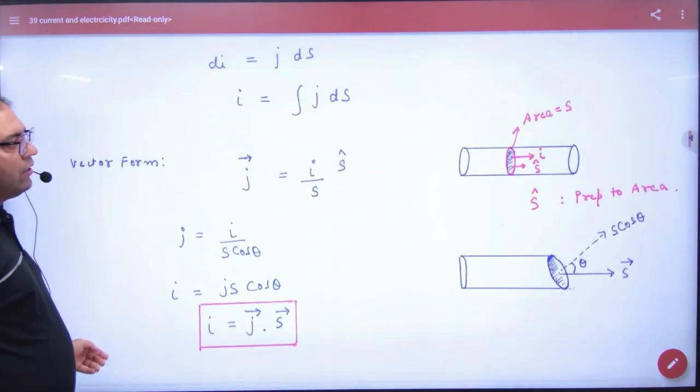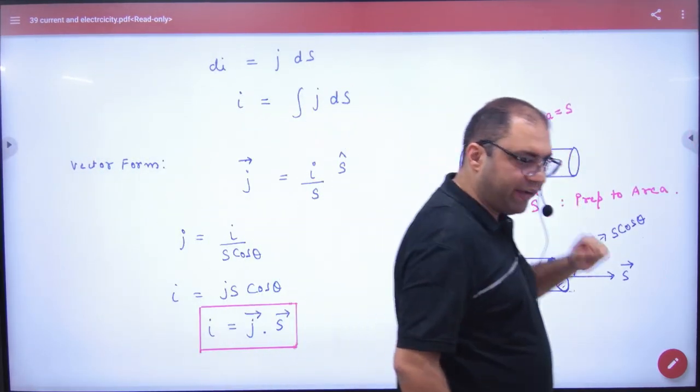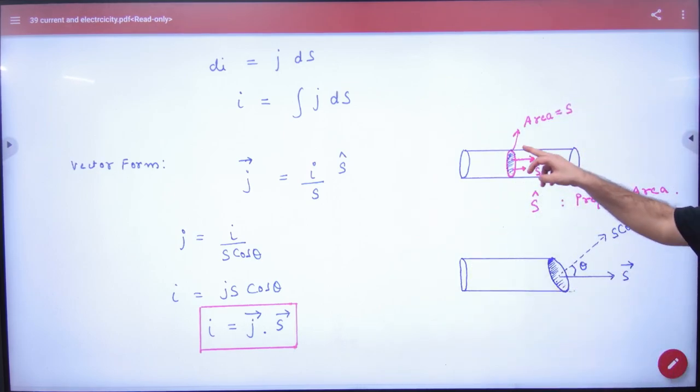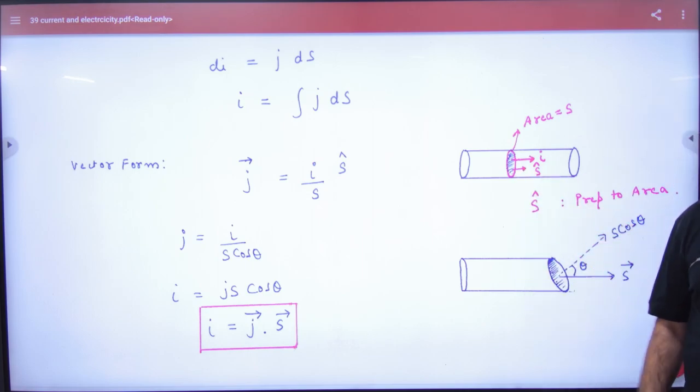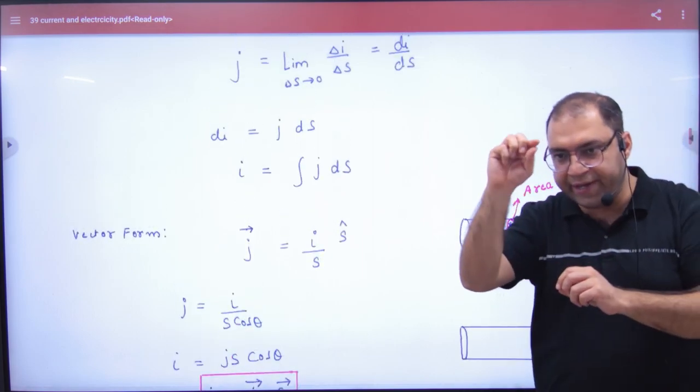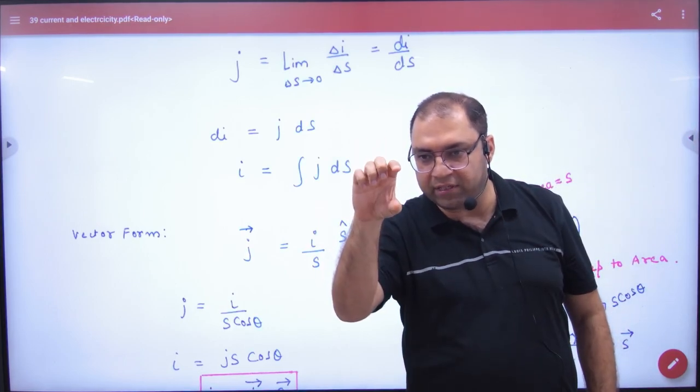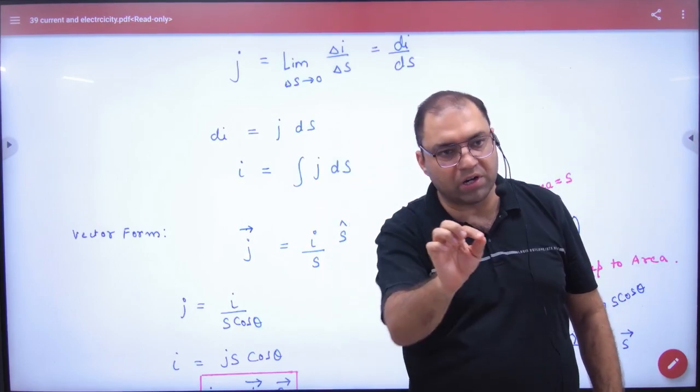For example, suppose aapke paas ek conducting wire hai. Ye iske under aapne cross sectional area liya hai, jo ki maan lo S hai. Ismein kitna current move kar raha hai? I. To agar main I current ko cross sectional area S se divide kar du, to current density ho gaya.